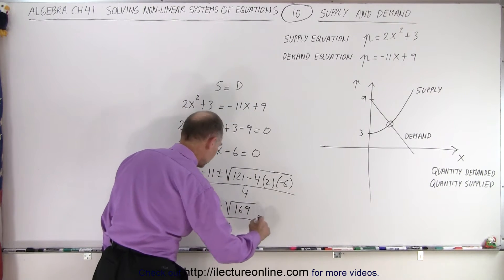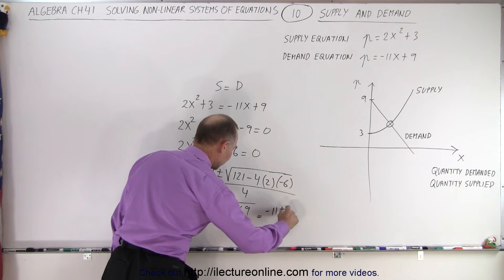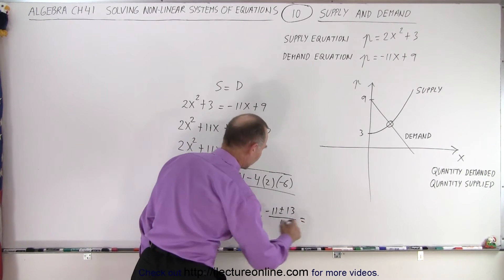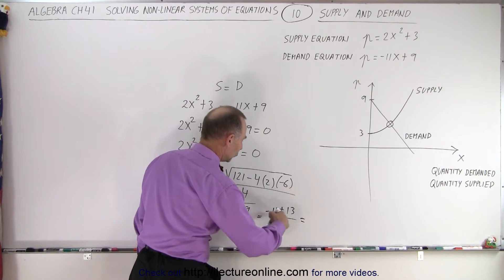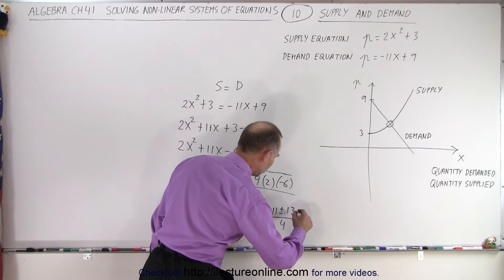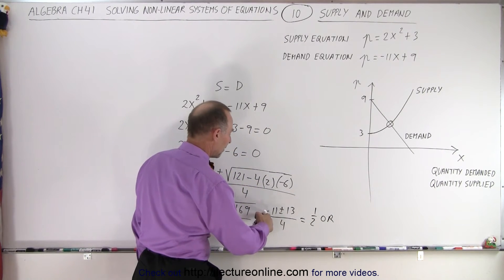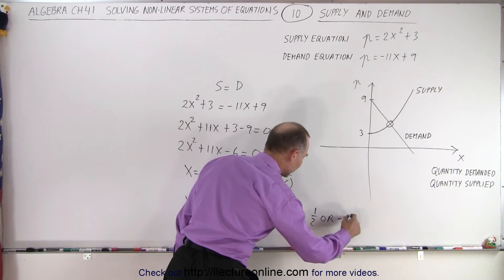So this is equal to minus 11 plus or minus 13 over 4, which means that this is equal to, when you add them two together, you get 2 over 4, which is 1 half. Or when you subtract the 2, you get minus 24 divided by 4, which is minus 6.